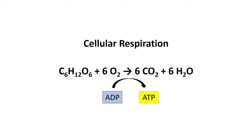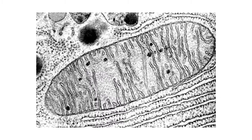The overall process of cellular respiration involves taking glucose, combining with oxygen, and breaking it down into carbon dioxide and water. During this process, ADP is converted into ATP.